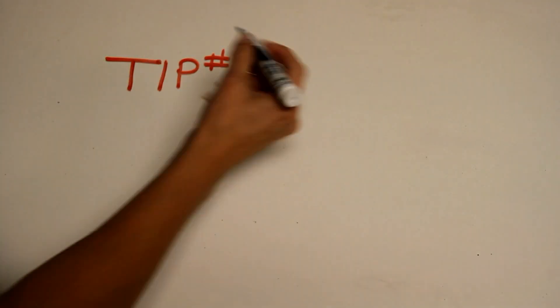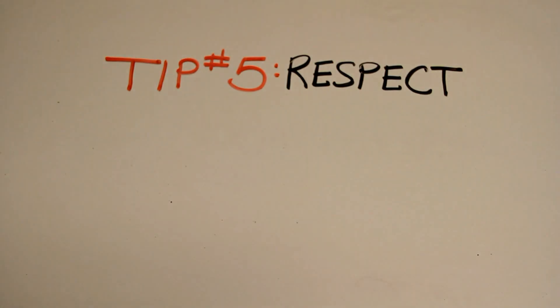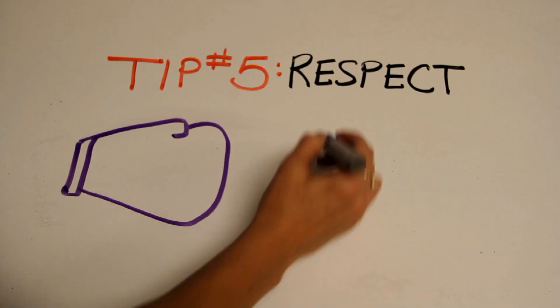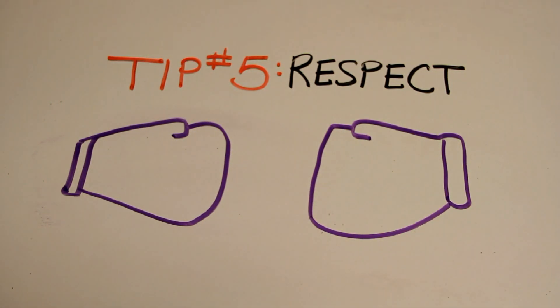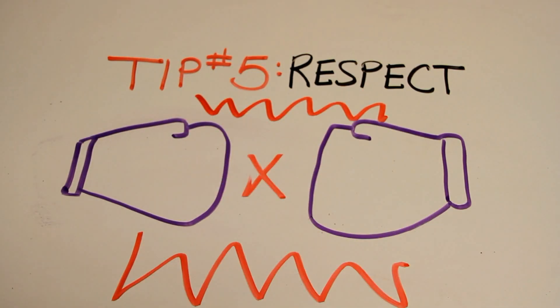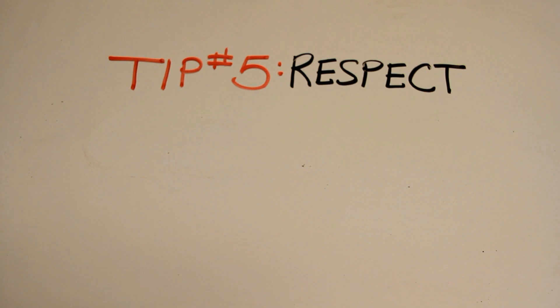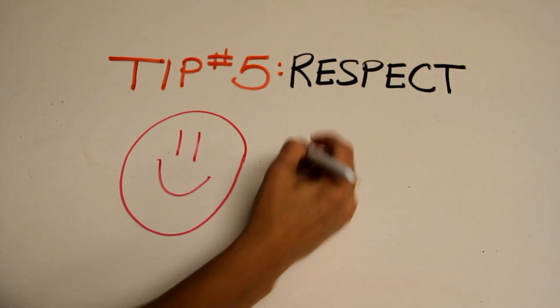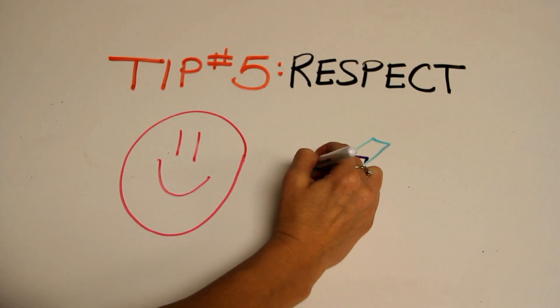Tip number five: respect. When conflict arises, good communication will help get to the root of the problem. This means keeping your emotions in check, responding in a calm, non-defensive, and respectful manner.